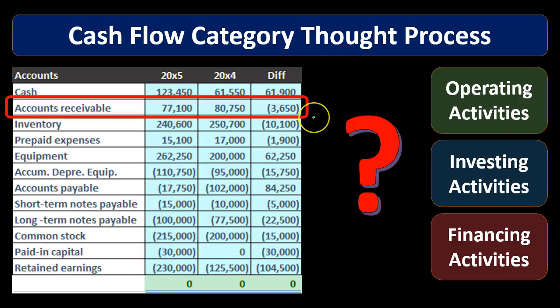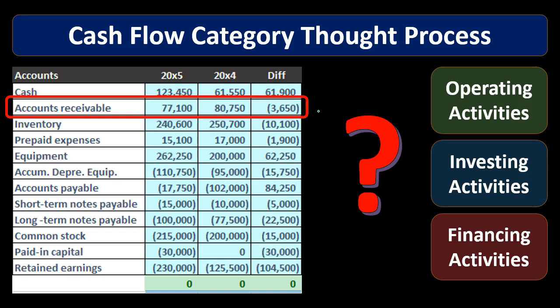Now this looks a little less intuitive than we might think at first glance, because we're looking at balance sheet accounts and trying to see what category these things fit into. Remember that the operating activities I keep comparing to the income statement — you might be thinking, well these are all balance sheet accounts, why do you keep mentioning the income statement? What we're doing is backing into the activity that's happening by looking at the change between two points in time, so we're still looking at income statement-type activity, even though we're doing that through changes in balance sheet accounts.